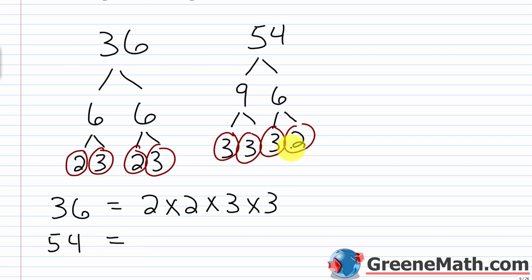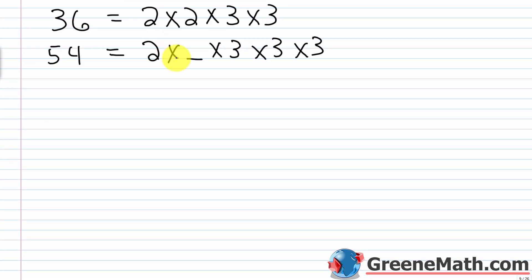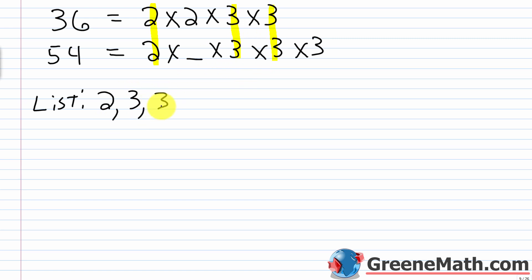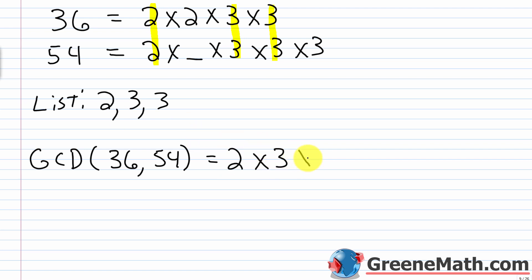For 54, I'll use 9 times 6. Neither is prime, so we continue. Nine is 3 times 3, and 6 is 3 times 2. All of those are prime, so circle them all. So 54 is 2 × 3 × 3 × 3. Comparing the factorizations, we have one 2 common to both, one 3 common, and a second 3 common. Our list contains: 2, 3, and 3. So the GCD of 36 and 54 is 2 × 3 × 3 = 18.